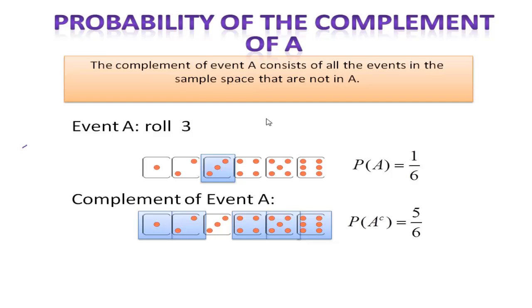If I add the probability of event A and the probability of the complement of event A, then this should be 1 or 100%. So the probability of A plus the probability of the complement of A, which is everything else other than rolling a 3, if I add those two probabilities, I should get 1.